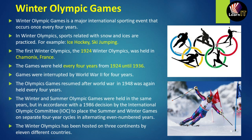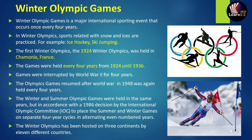The games were held every four years from 1924 until 1936, then there was an interruption due to World War II. The Olympic games resumed in 1948 and again held every four years. The winter and summer Olympic games were held simultaneously, but in 1986 the International Olympic Committee, IOC, decided to separate them into alternating two-year cycles within four-year periods.